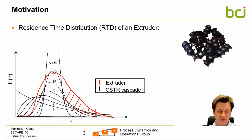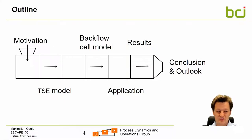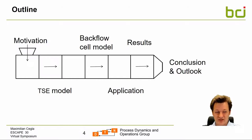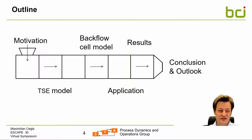This tailing occurs because of internal backflows. Regarding the outline of my talk: I've already started with the motivation for why the residence time distribution of a twin screw extruder is important and why improvements are needed. I will then describe the used twin screw extruder model, followed by the backflow cell model methodology we integrate to parametrize the internal flows. Then I will show the application, some results, and conclude with a short outlook.